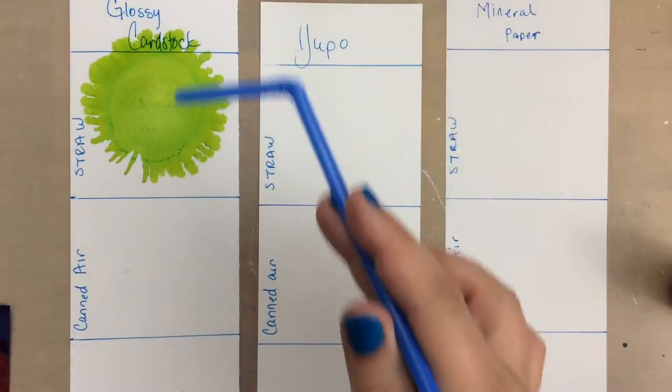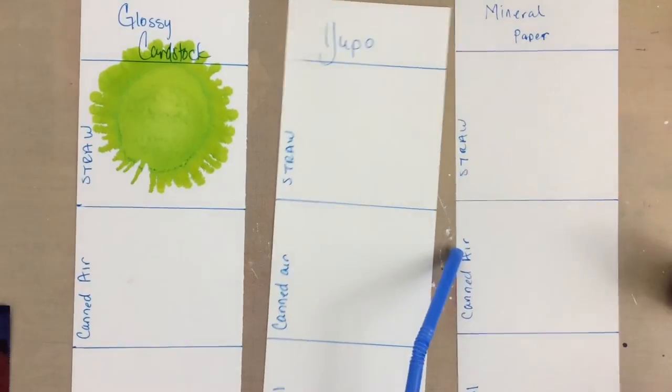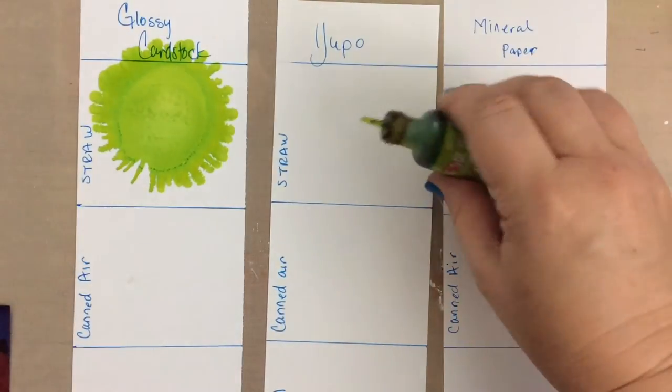All right, so you get a nice floral bloom with these really nice curvy kind of tendrils. It's a very floral shape you get on the glossy cardstock with the straw.